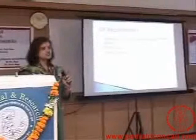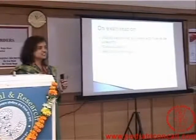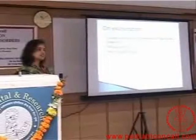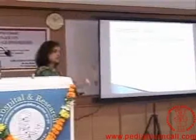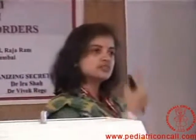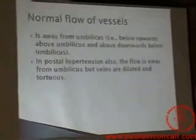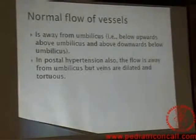So the flow is below upwards — this is IVC obstruction, this is Budd-Chiari syndrome. In Budd-Chiari, flow is from below upwards. In portal hypertension the flow is normal — above the umbilicus upwards, below downwards. IVC obstruction means flow from below upwards — and that is the diagnostic finding here.